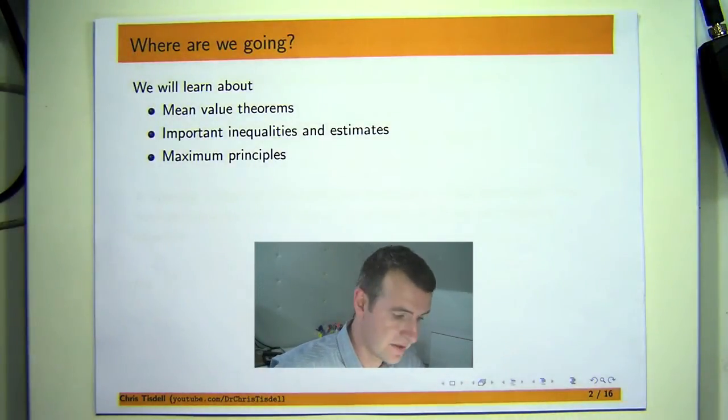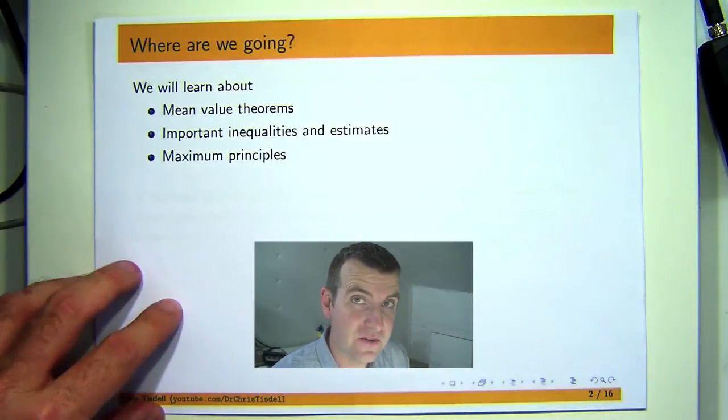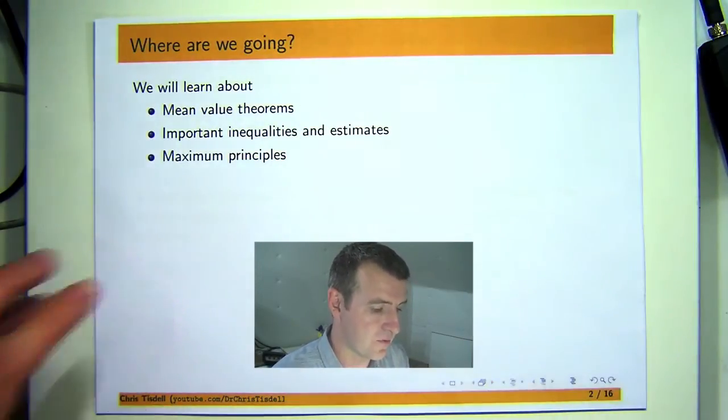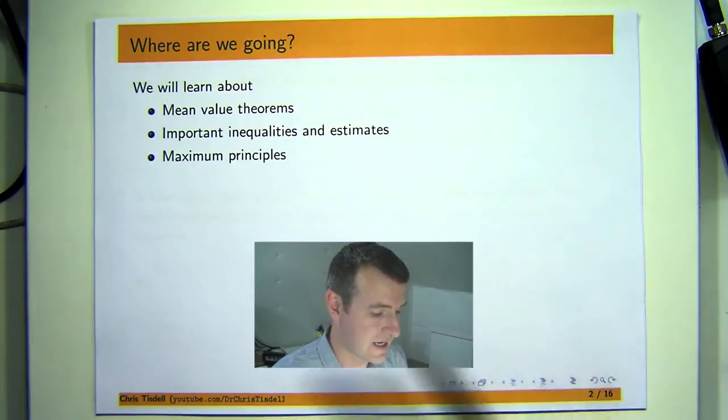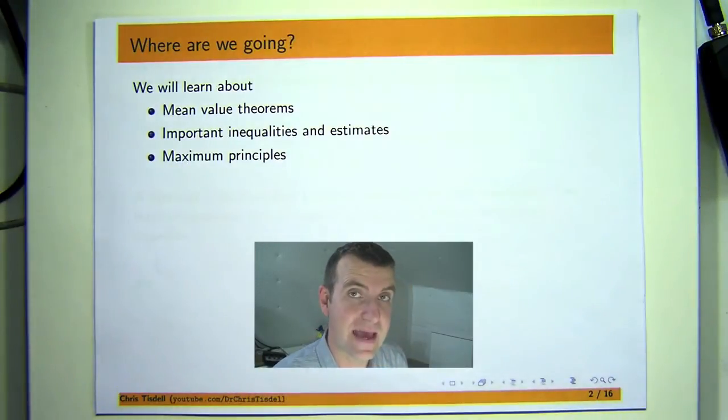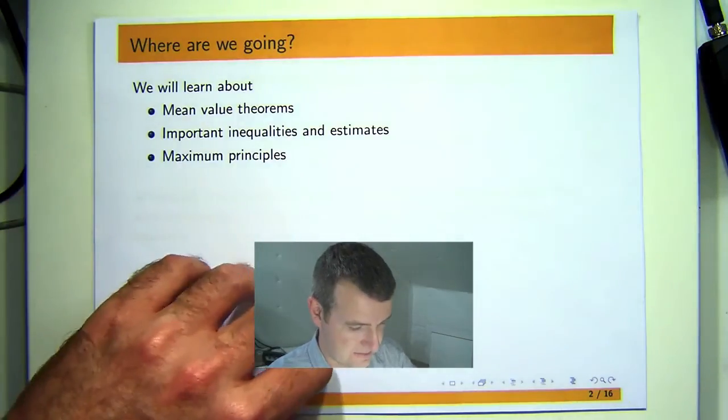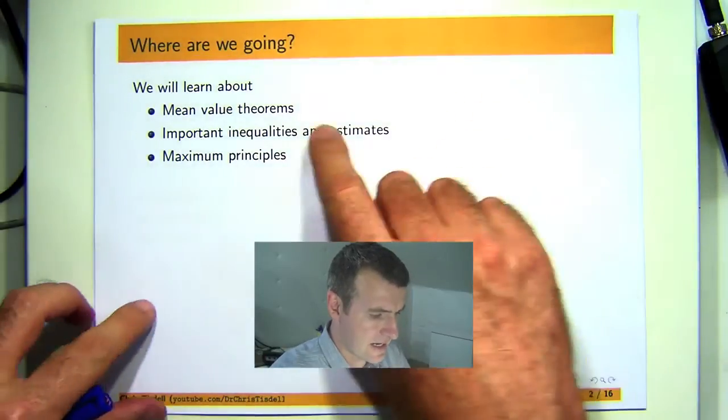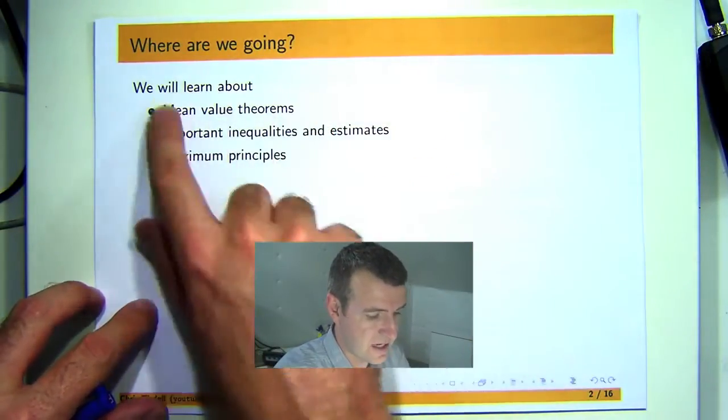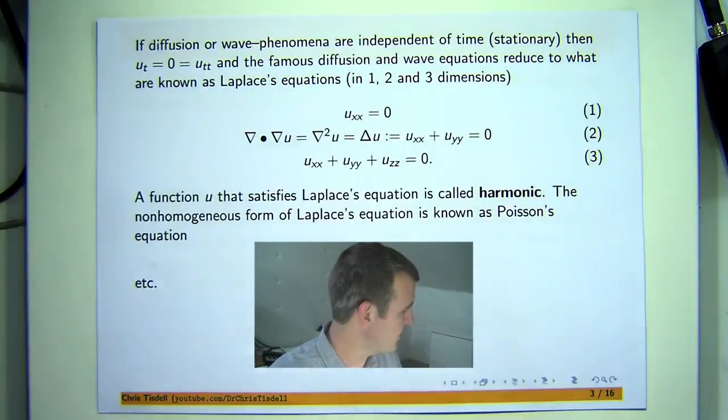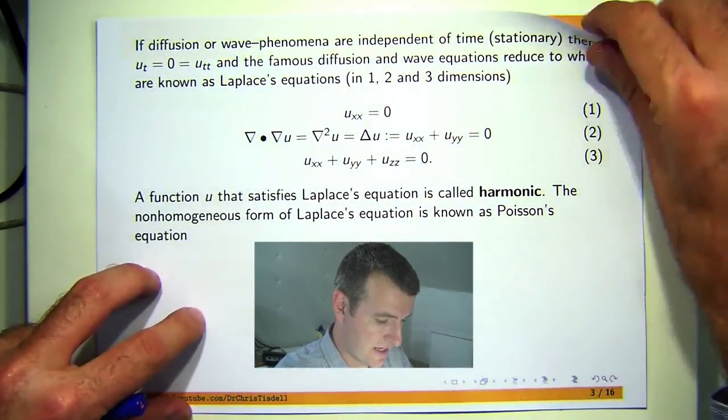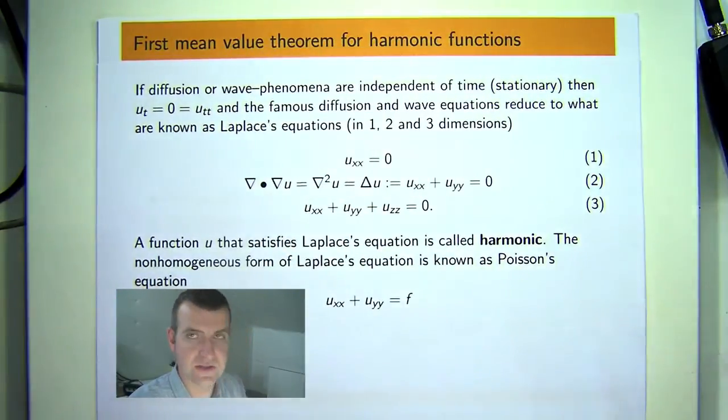In this section, we're going to prove some mean value theorems. We're going to also derive some important inequalities and estimates, and the centerpiece of this section are the maximum principles and their application to boundary value problems involving the Laplace's equation and variations like Poisson's equation. The focus of this presentation is on the first dot point. In particular, we're going to prove a mean value theorem for harmonic functions. And it's known as the first mean value theorem because there are two.